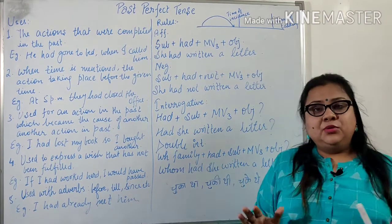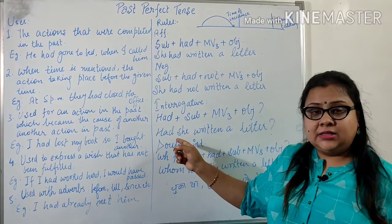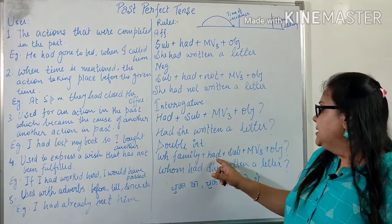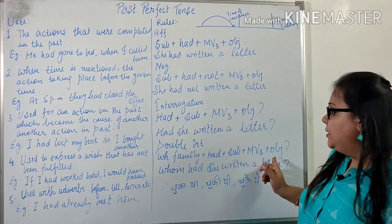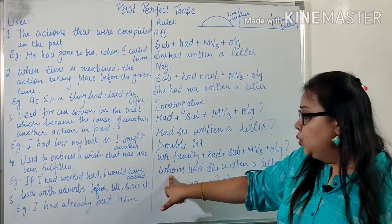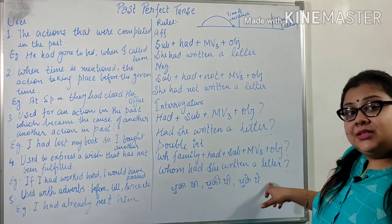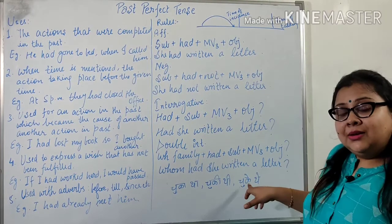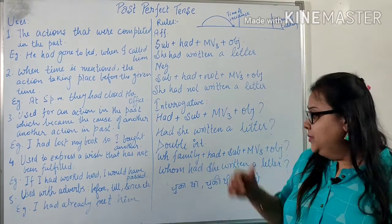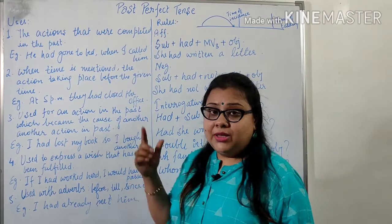For double interrogative sentences, the WH family is included in the rule. The structure is: WH word + had + subject + main verb third form + object. From the WH family I have taken 'whom' here. For example: 'Whom had she written a letter?' — woh letter kya likh chuki thi? I hope the rules are clear.